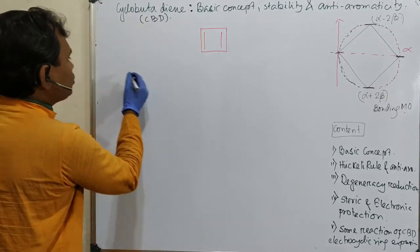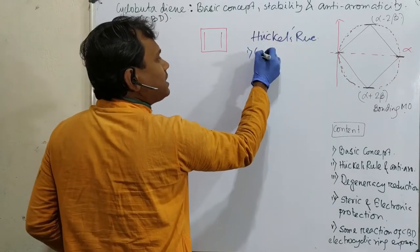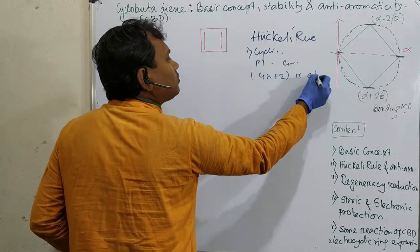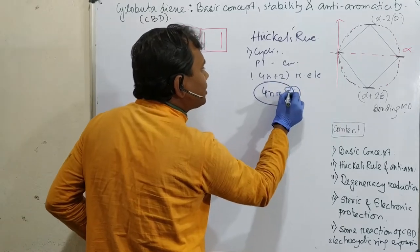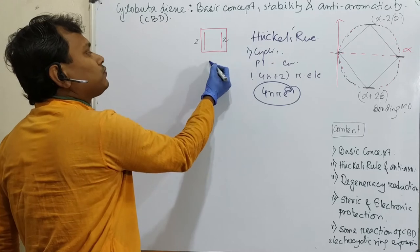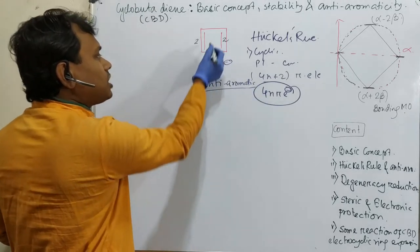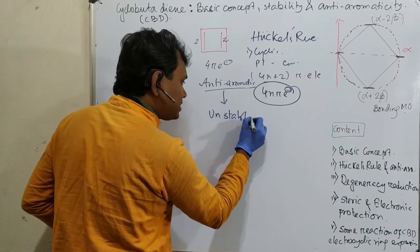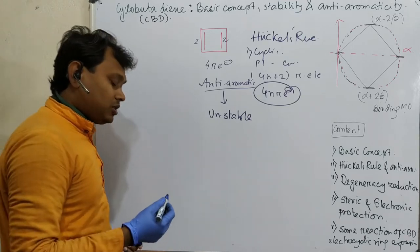So let's start. Cyclobutadiene is a cyclic butadiene. According to Hückel rule: cyclic, planar, conjugated, and 4n+2 number of pi electrons for aromatic systems, and 4n number of pi electrons for anti-aromatic systems. Cyclobutadiene has 4 pi electrons, meaning n=1, so this is anti-aromatic. Anti-aromatic means unstable, as discussed in the first video on Hückel rule and cyclopropenium cation.